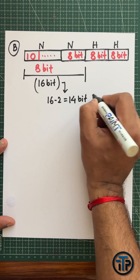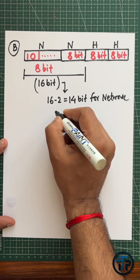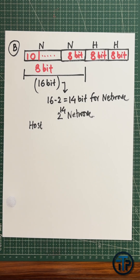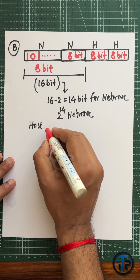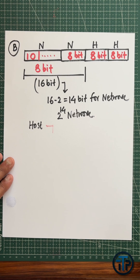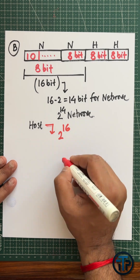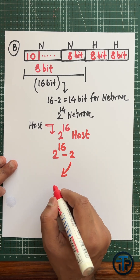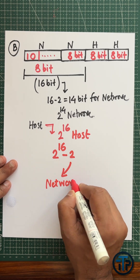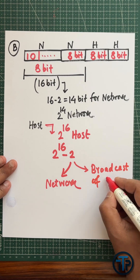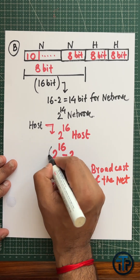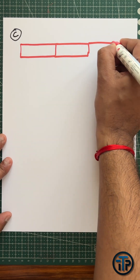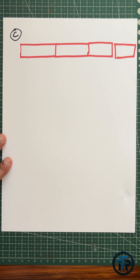So 16 minus 2 gives 14 bits that can be used for the network, meaning 2 to the power 14 networks can be supported. For hosts, 16 bits are available, but two addresses are reserved — one for the network and one for broadcast — so it is 2 to the power 16 minus 2 hosts per network. In Class C, there are 24 bits total for the network address and the remaining 8 bits for the host address.